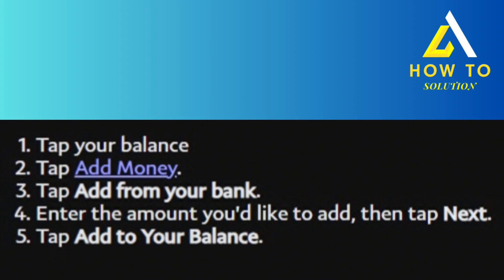Head over to your PayPal app and tap on Balance, then tap on Add Money. It's going to ask you how you'd like to add money, and you're going to click on Add from Your Bank. Then enter the amount that you want to add, tap on Next, and then tap on Add to Your Balance.